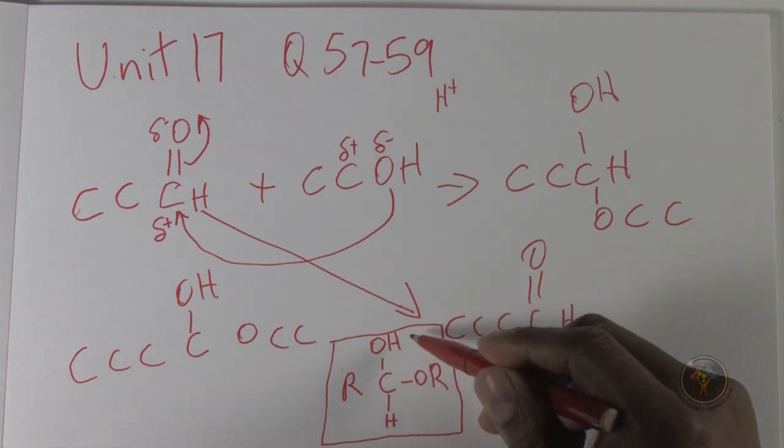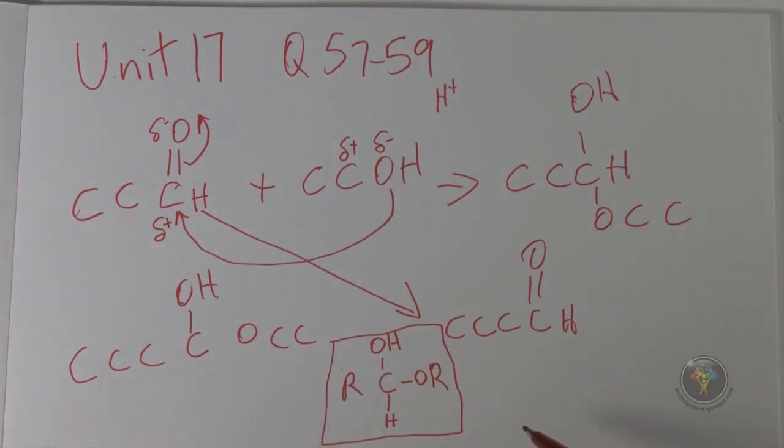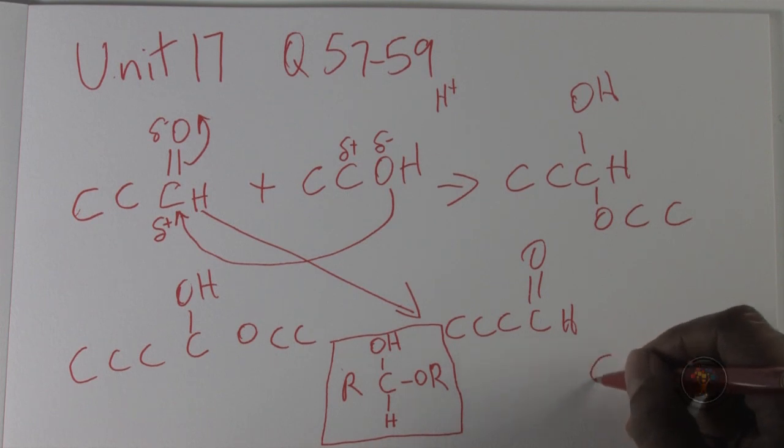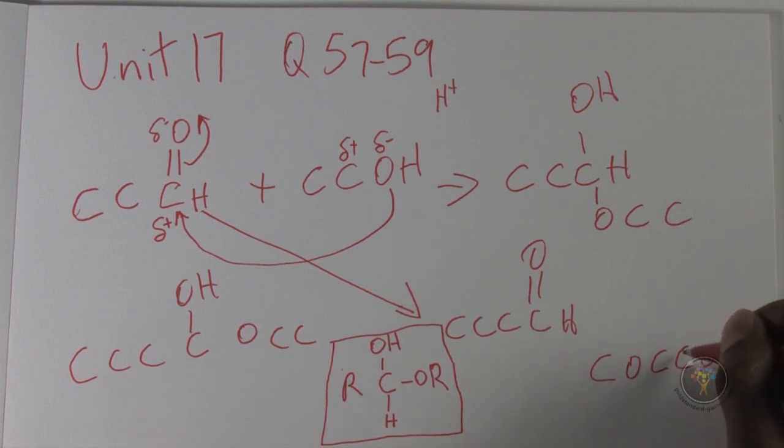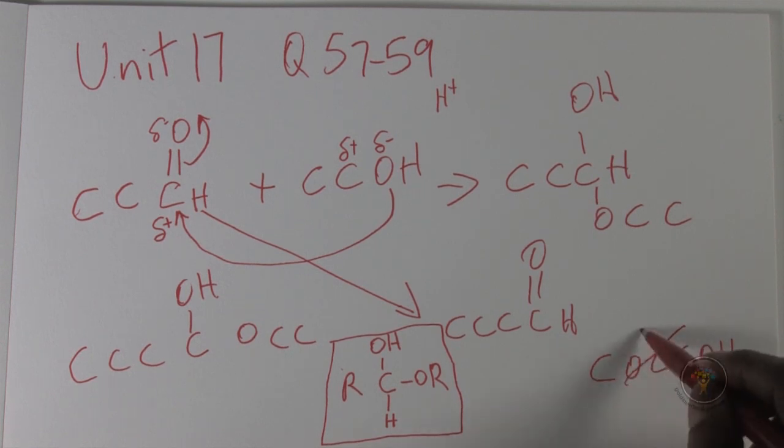Now we look at the potential answer choices. For Roman numeral one, we have ROR, but the OH group is too far away. See, you have carbon-oxygen-carbon-carbon-OH. This OH is on this carbon, this oxygen is bonded to this, but for a hemiacetal, both oxygens are on the same carbon. This is not the case, so Roman numeral one is incorrect.